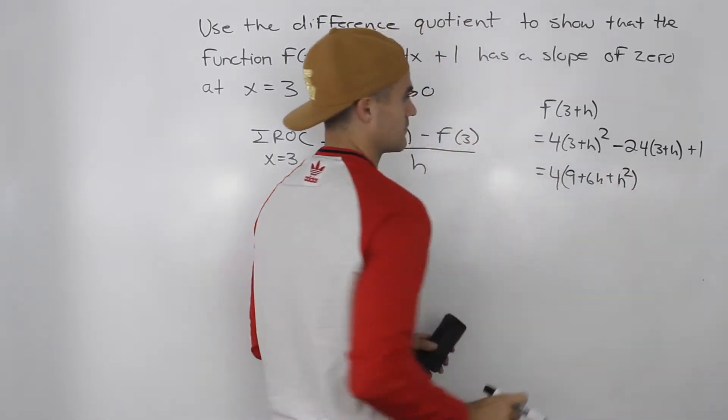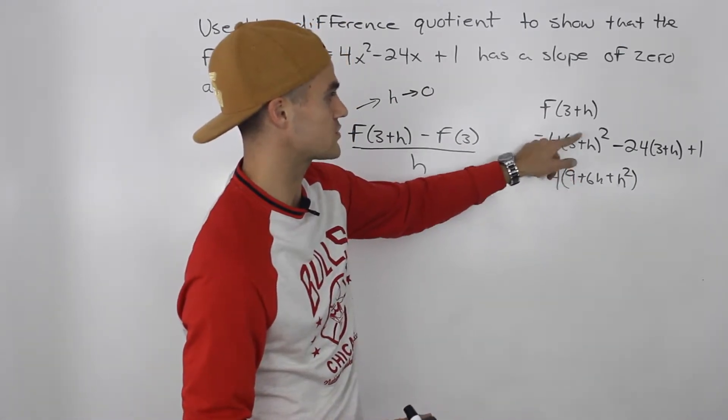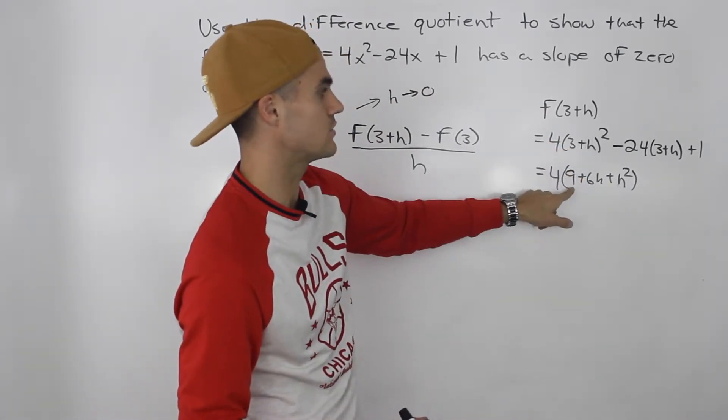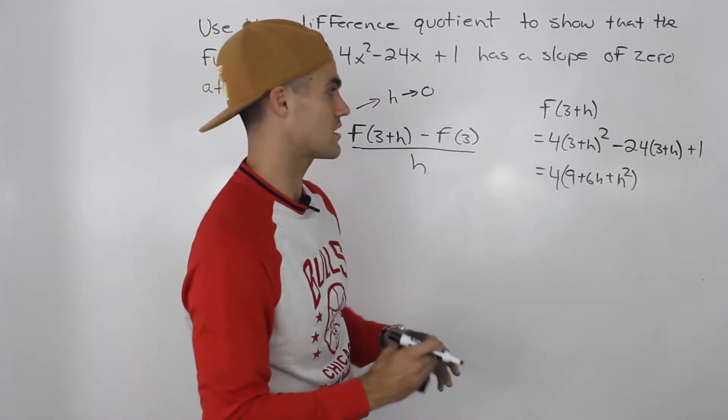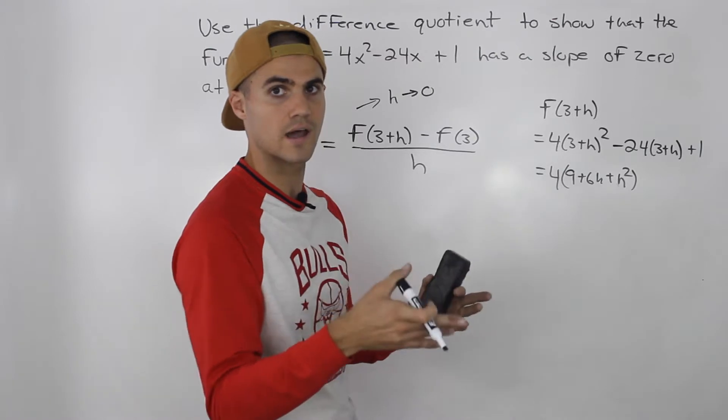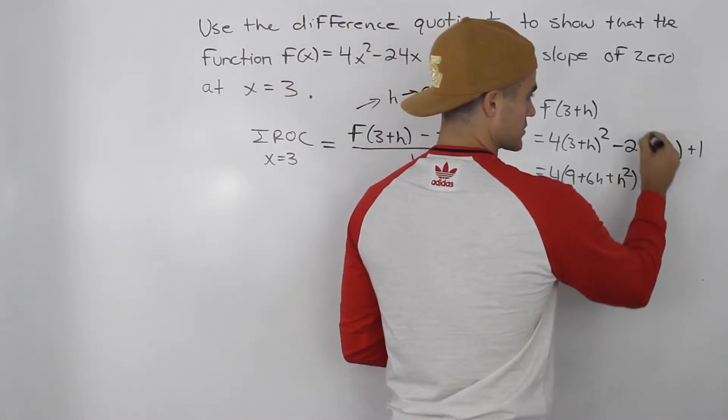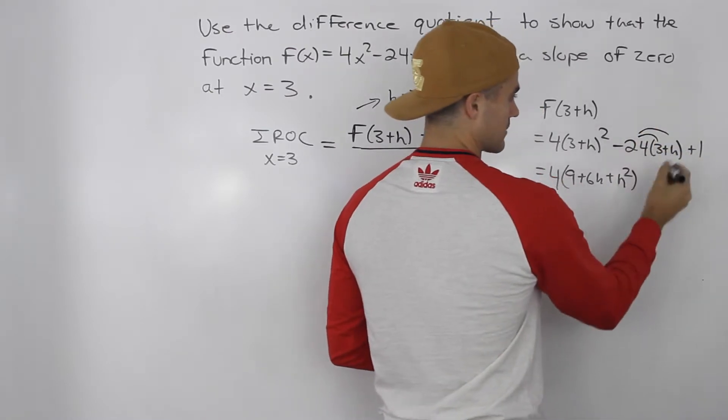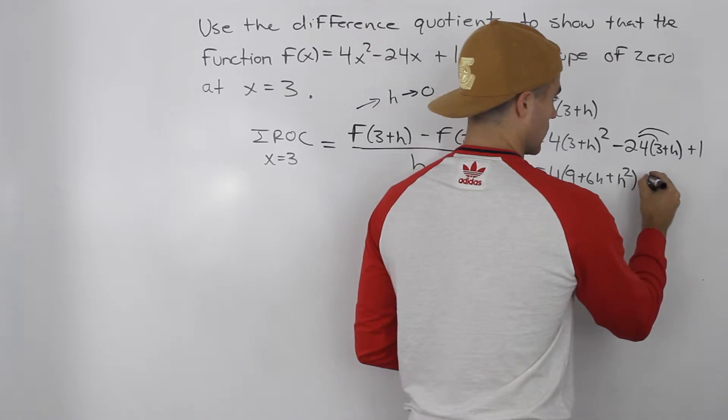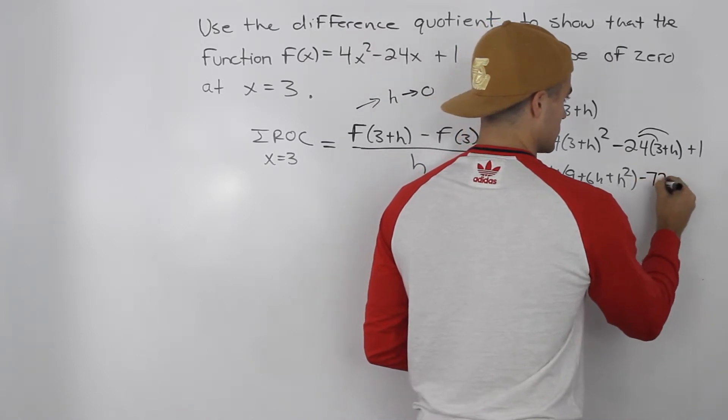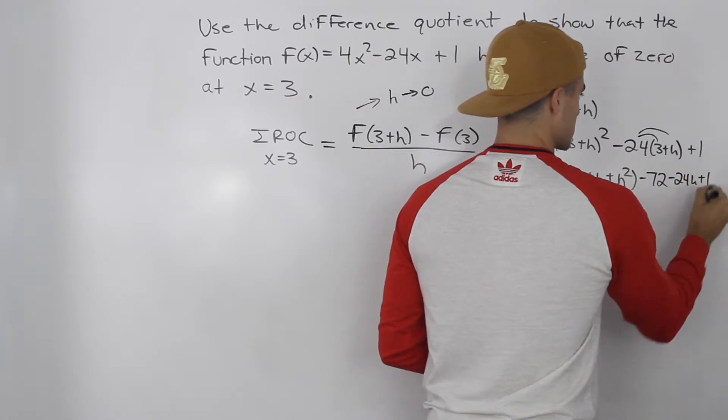Be careful with this step. Sometimes students forget to FOIL it and all they do is they do 3² + h² or they do 9 + h². But remember there's that middle term 6h there because you have to FOIL it out and then add the like terms. Minus 24 times 3, we can bring this minus 24 inside. So minus 24 times 3 is negative 72 and then we have -24h + 1.